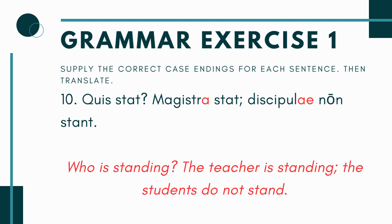The last problem: 'Quis stat? Magistra___ stat; discipula___ non stant.' Quis stat means 'who is standing?' For the blanks, look at the verb: stat is singular, so we use magistra — the teacher is standing. In the second half, stant ends in -nt meaning they are standing, so it's not discipula but discipulae, plural — the students are not standing. Putting it together: who is standing? The teacher is standing; the students are not standing.